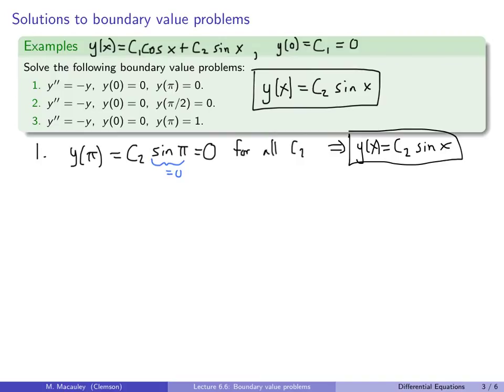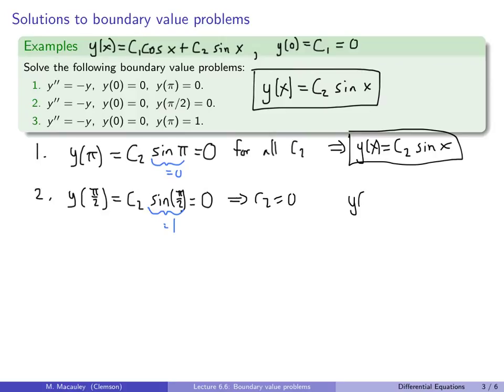For the second BVP, y(π/2)=0: C₂·sin(π/2) = C₂·1 = 0, so C₂ must equal 0. The only solution is y(x)=0 — a unique solution.